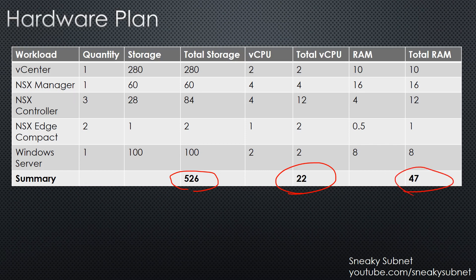At this point you can probably notice that my environment doesn't satisfy the vCPU requirements since I have only 12. That's correct, but in practice these requirements assume a production environment, not a testing lab. CPU is probably the most tolerable resource in this list since your lab will just be very slow if it lacks CPU resources at some particular point in time. Storage is a little bit different — you don't need all 526 gigs at the start, but as time goes by your storage usage increases, and if your storage is full it means you can't create any more data unless you delete something.